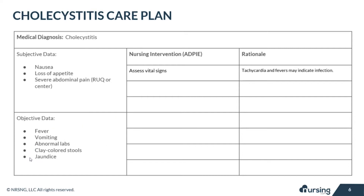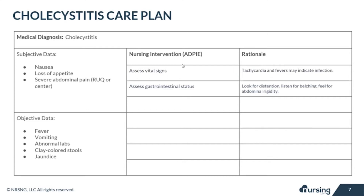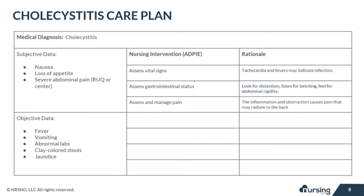Now let's look at our nursing interventions and rationales. Our first nursing intervention is to assess your patient's vital signs — look for tachycardia and fevers, because that could indicate infection. Next, you will assess the gastrointestinal status of your patient: look for abdominal distension, listen for belching, and feel for abdominal rigidity.